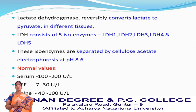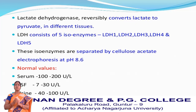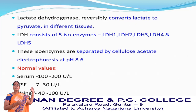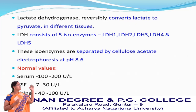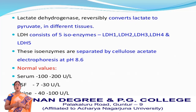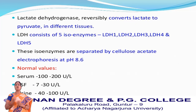The main function of lactate dehydrogenase is that it reversibly converts lactate to pyruvate. LDH consists of 5 isoenzymes: LDH1, LDH2, LDH3, LDH4, and LDH5. These isoenzymes are generally separated by cellulose acetate electrophoresis at pH 8.6.